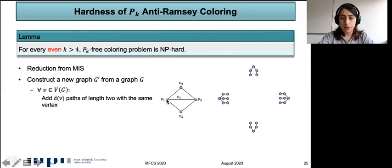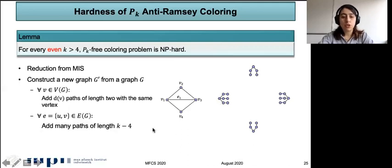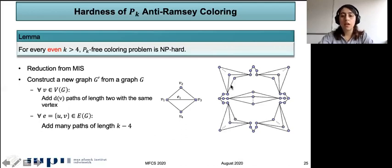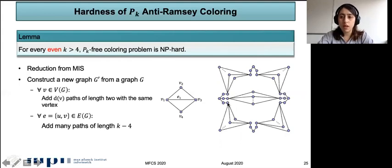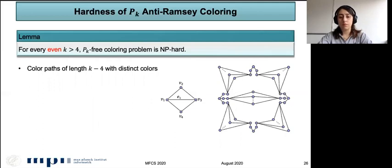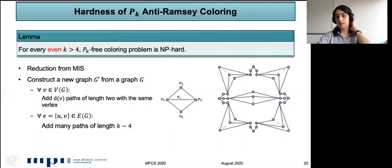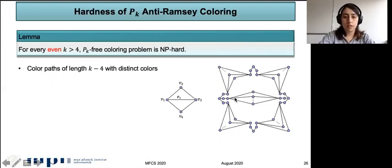For example, vertex V1 has degree three, so we add three paths of length two with the same vertex V. Then for each edge UV in G, we add many paths of length K−4 between the leaves of the gadget, using a separate leaf pair for each edge. We can choose different leaves since we have exactly d_V leaves for each vertex gadget. We choose the number of these paths such that in the optimal coloring they receive distinct colors — so they are colored with distinct colors in any optimal coloring.